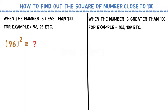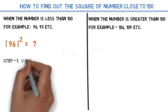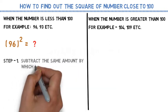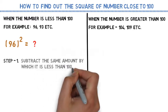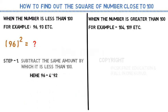In step 1, we need to find out how much the number is less than 100. 96 is 4 less than 100, right? So you need to subtract 4 from 96. 96 minus 4 is 92. Yes.